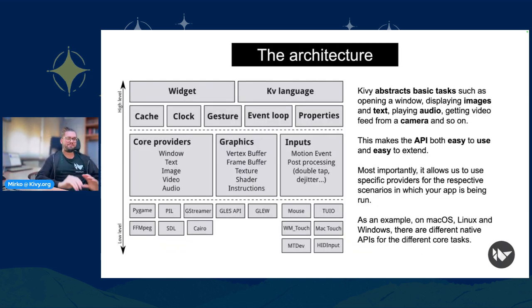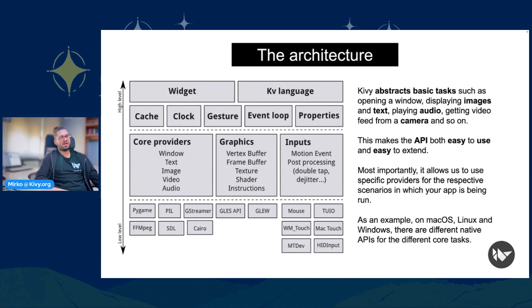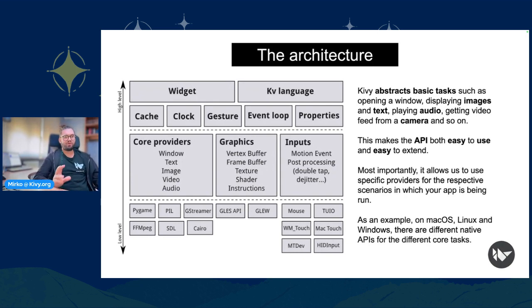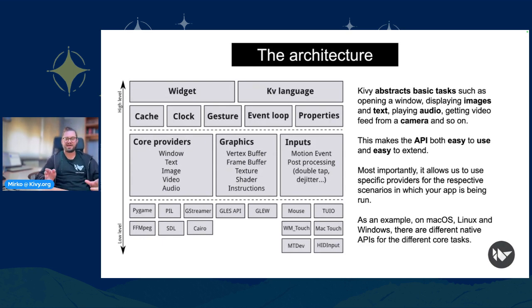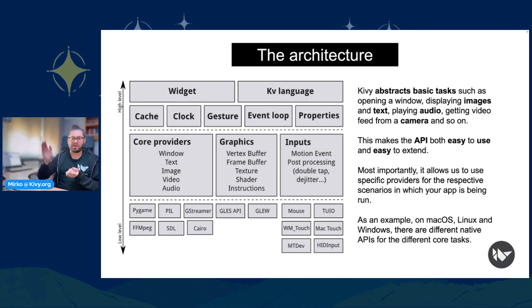Kivy's architecture abstracts busy tasks such as opening a window, displaying images and text, playing audio, or getting video feed from a camera, making the API both easy to use and easy to extend. Most importantly, it allows using specific providers for explicit scenarios. For example, on macOS, Linux, and Windows there are different native APIs for different core tasks — if I need to access the camera on iOS I'll use AVFoundation camera; on Android we use CameraX.